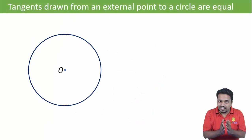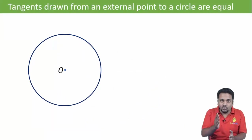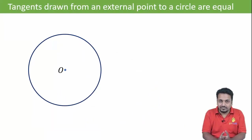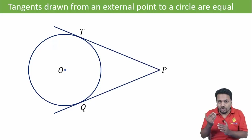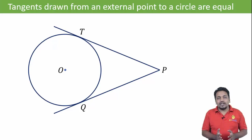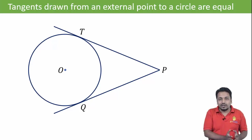Next property: tangents drawn from an external point to a circle are equal. PT and PQ are two tangents drawn from point P, and we have to prove that they are equal — PT is equal to PQ.